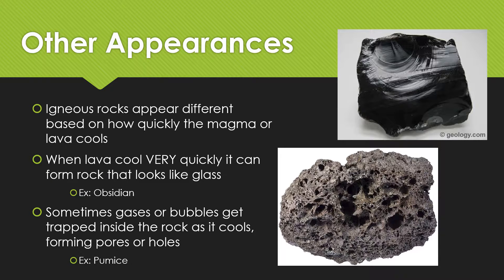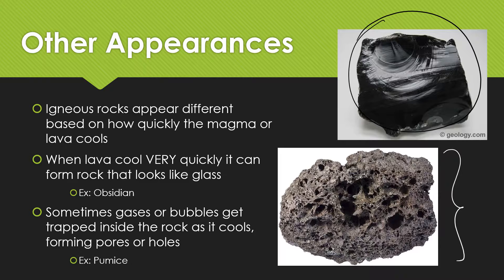There are a couple of other types of igneous rocks that don't fit neatly into fine-grained or coarse-grained. When lava cools extremely fast, it can form a rock that looks like glass — that's called obsidian, which looks like a black glass. Sometimes gas bubbles get trapped inside the rock as it cools quickly, leaving little pockets where the bubbles used to be. An example of this is pumice. A lot of these rocks are formed when volcanoes erupt and throw rocks through the air, collecting air bubbles as they cool.